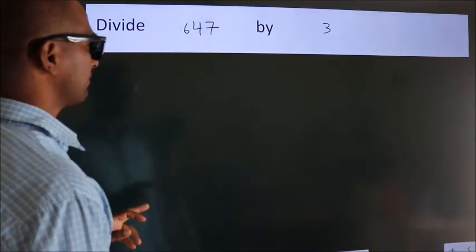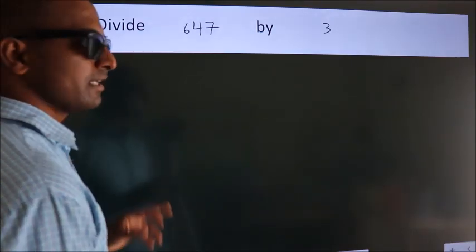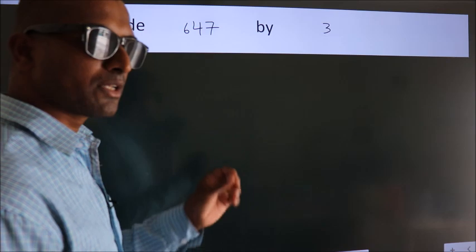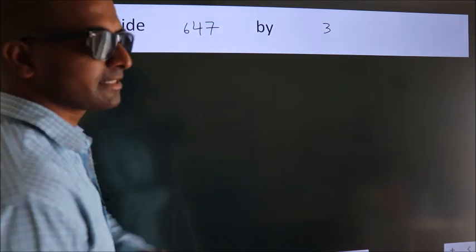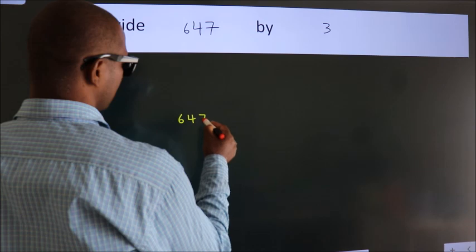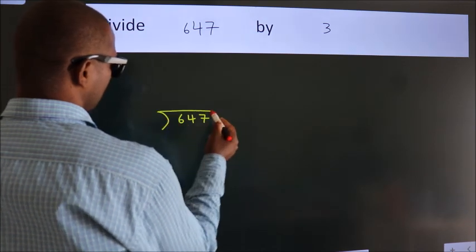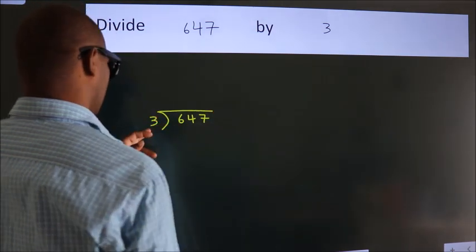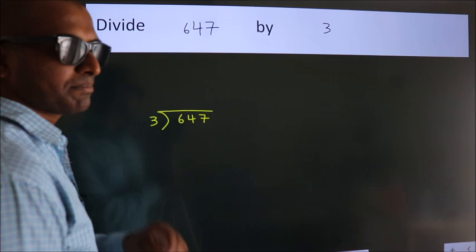Divide 647 by 3. To do this division, we should frame it in this way. 647 here, 3 here. This is your step 1.